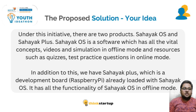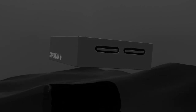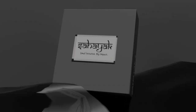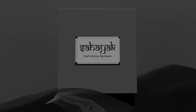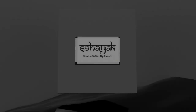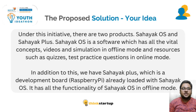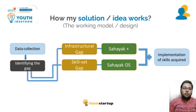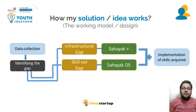SAHAYAK comprises two assets, one being software and the other being hardware. The hardware is a one-board computer, which is power and space efficient compared to a normal personal computer. Both the SAHAYAK assets can be used together, or only the software part can be applied based on the school's requirement.